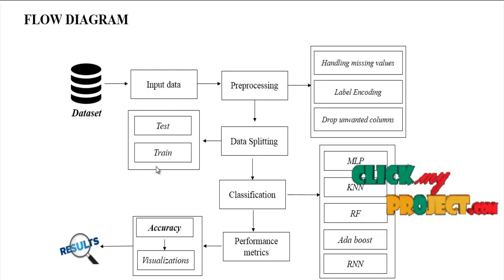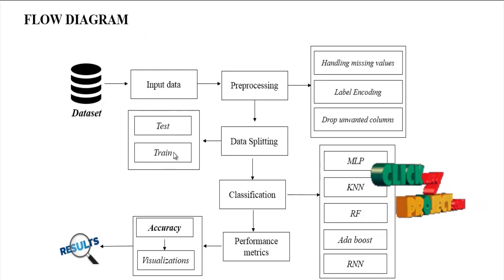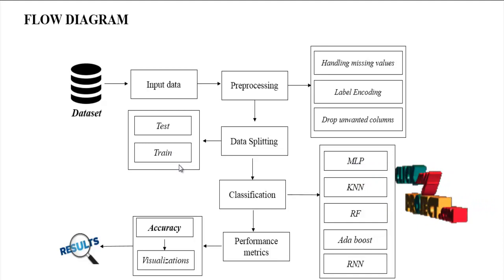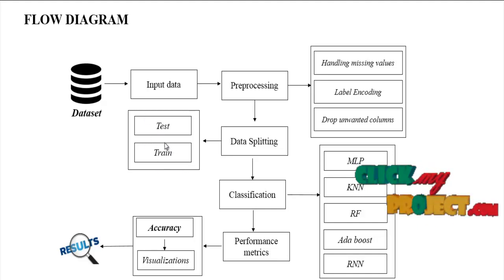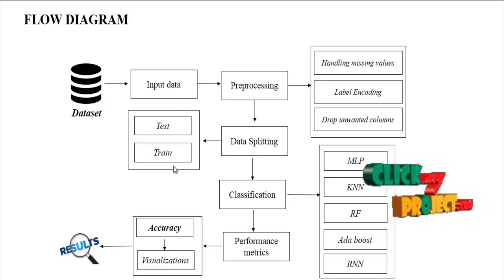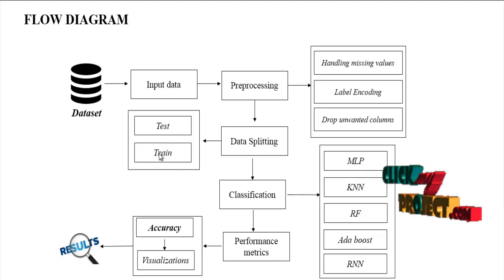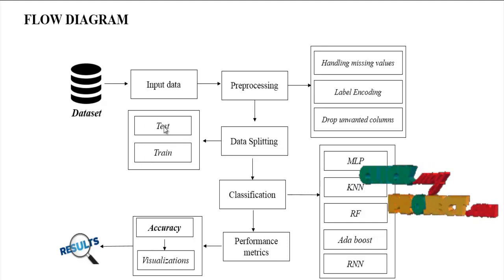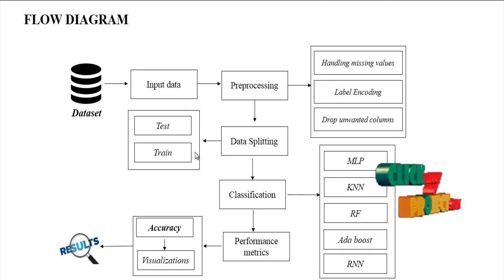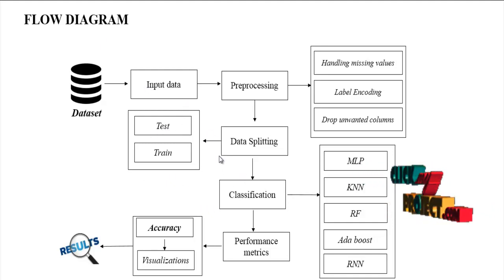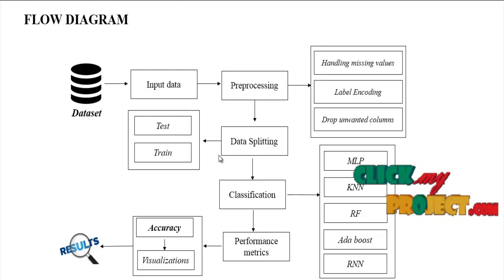The data split ratio is either 70% train and 30% test, or 80% train and 20% test. Based on this ratio, we split the input dataset into test and train sets.